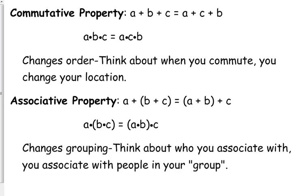The associative property says it doesn't matter how you group things — it's equivalent, and we have one for addition and one for multiplication. Think about who you associate with, the people in your group of friends. So we could group B and C together, add those first, then add A — or add A and B together, then add C. We get the same result; it's just sometimes easier to do one way as opposed to another.